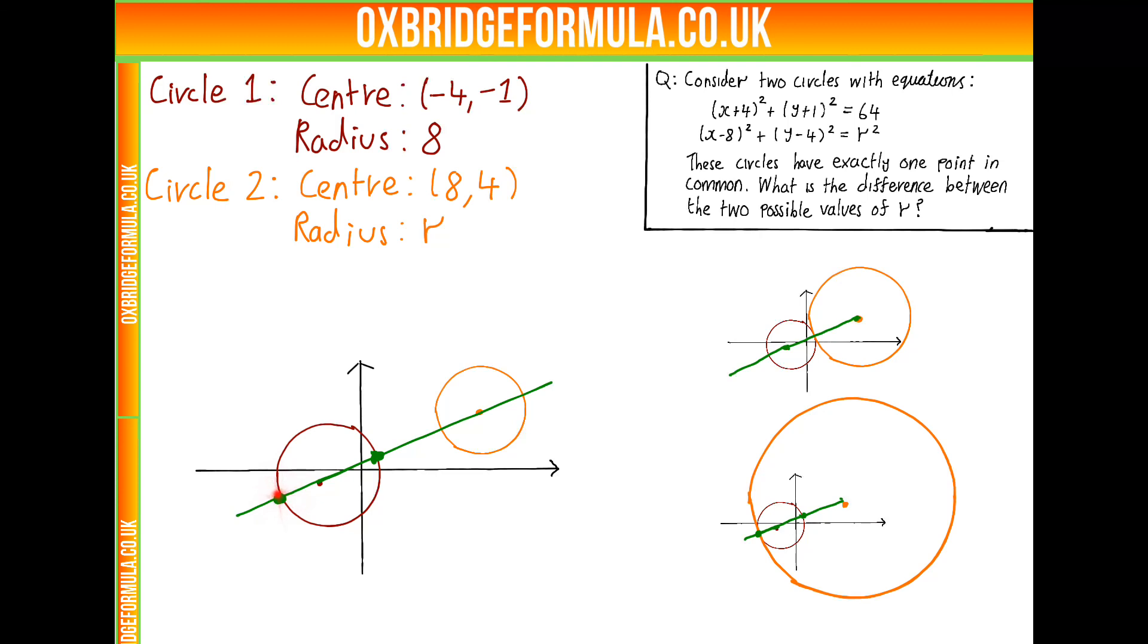And that's quite easy to work out, because we already know the radius of this purple circle. It's eight. And we'll see this is just two lots of the radius, this distance, because it goes straight through the centre. So, we know this difference between possible values of r is 16. And this corresponds with our answer of C in a multiple choice.